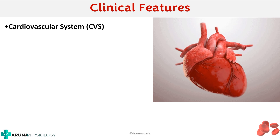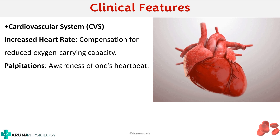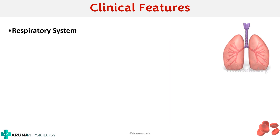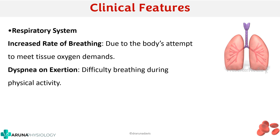In the cardiovascular system, anemia causes increased heart rate as compensation for reduced oxygen-carrying capacity, palpitation, and worsening of any existing cardiac disease due to increased strain on the heart. In the respiratory system, the lungs increase the rate of breathing as the body's attempt to meet tissue oxygen demands, and there will be dyspnea on exertion — difficulty breathing during physical activity.